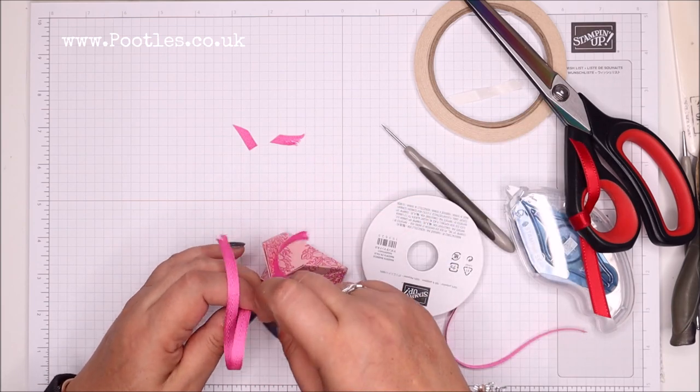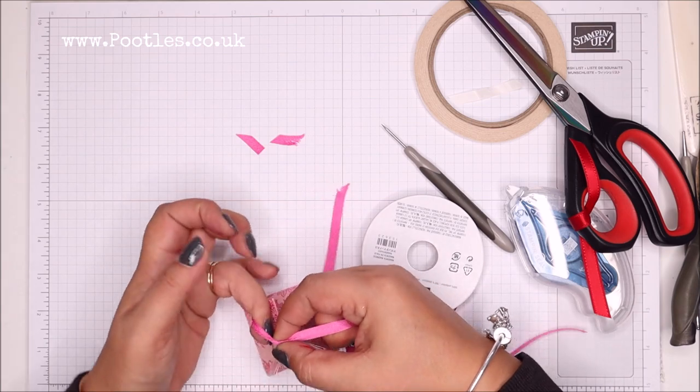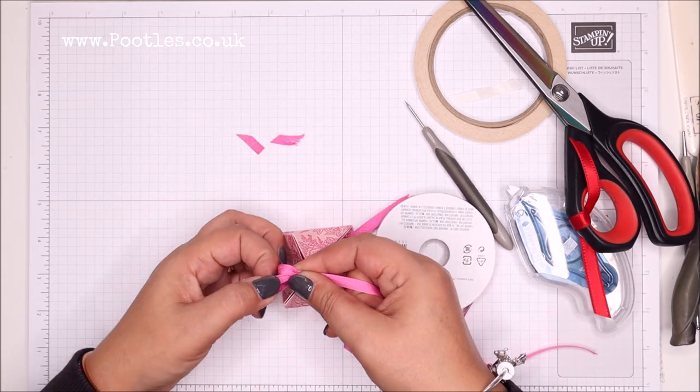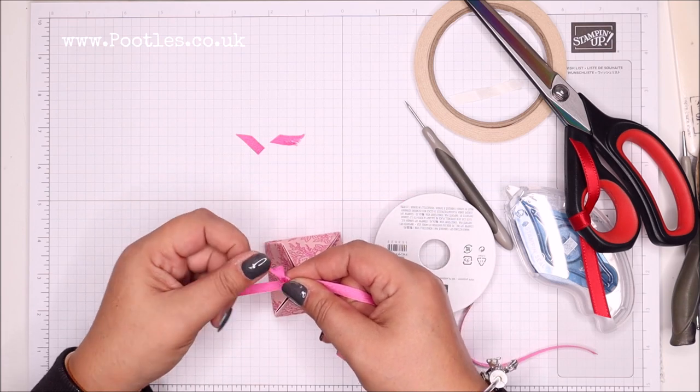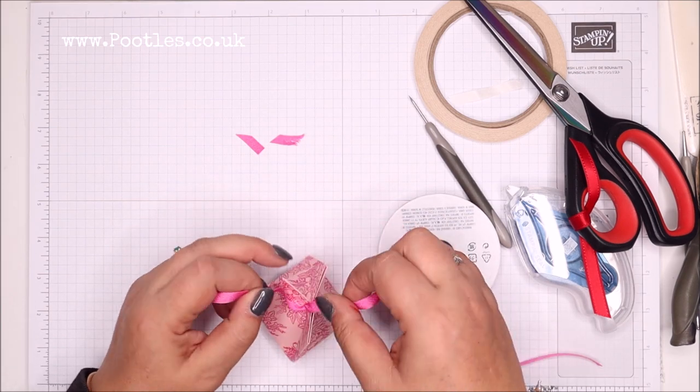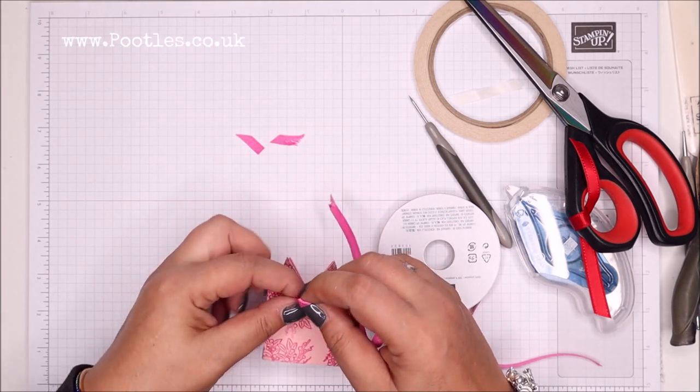And I'm going to tie a knot, and then tie a bow. If I can actually extract my finger. Okay, so there's my knot tied. And now I'm going to tie a bow on the front.